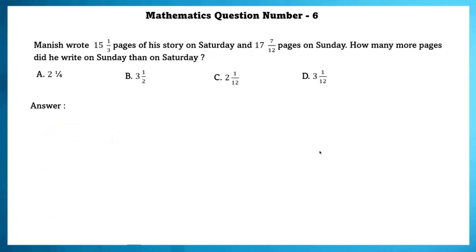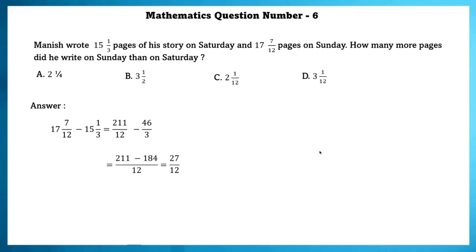Mathematics question number 6. Manish wrote 15 and 1/3 pages of his story on Saturday and 17 and 7/12 pages on Sunday. How many more pages did he write on Sunday than on Saturday? Subtracting the number of pages written on Saturday from Sunday, we get 27/12, which simplifies to 2 and 1/4.